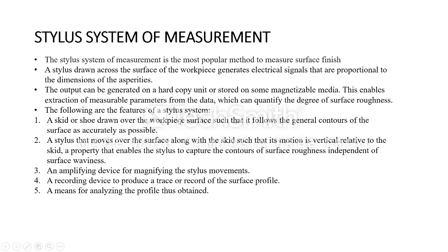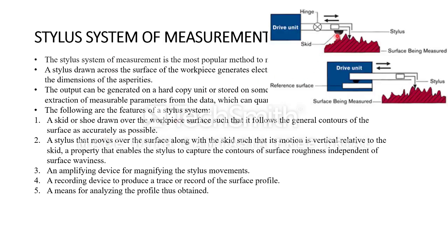The skid follows the contour of the workpiece, and the stylus — which is a movable element vertically with respect to the skid — can measure the finish of the surface irrespective of the waviness of the workpiece. The stylus moves over the surface along with the skid such that its motion is vertical relative to the skid, a property that enables the stylus to capture the contour of surface roughness independent of the surface waviness.